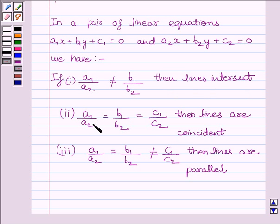If A1 upon A2 equals B1 upon B2 equals C1 upon C2, then the lines are coincident. And the third condition: if A1 upon A2 equals B1 upon B2 is not equal to C1 upon C2, then the lines are parallel. This is the key idea to solve the given question.